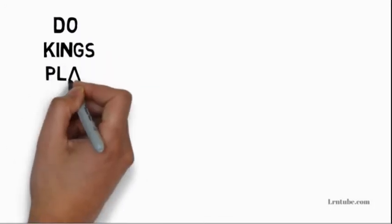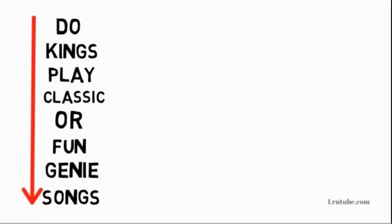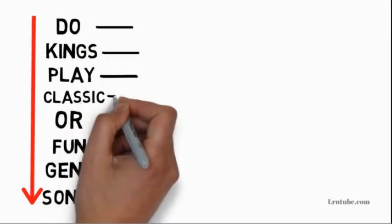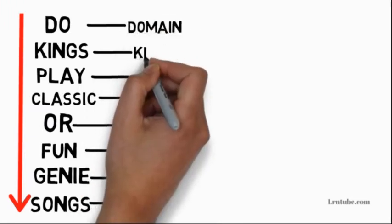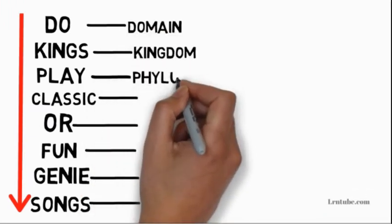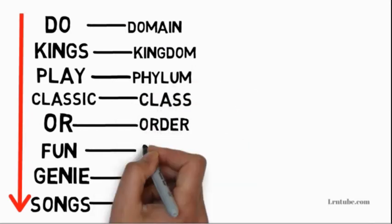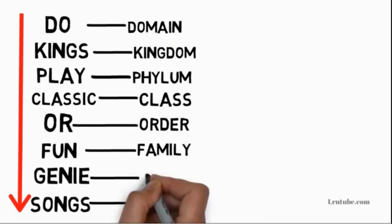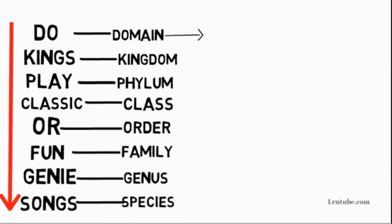The mnemonic is: Do Kings Play Classic Or Fun Genie Songs. You can use this to remember the taxa in hierarchical order: Domain, Kingdom, Phylum, Class, Order, Family, Genus, and Species.